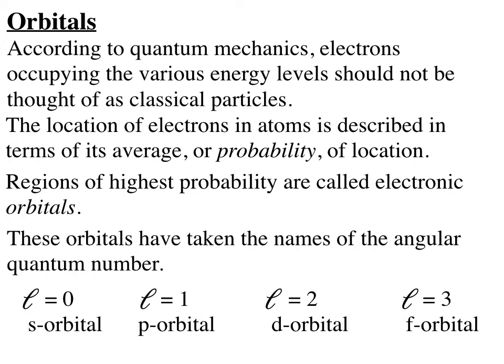You should also know the rules for orbital designations beyond F: L equal to 4 is a G orbital, L equal to 5 is H, L equal to 6 is I, and L equal to 7 is the L orbital — J is skipped for reasons in physics. For our atoms, though, all we need to concern ourselves with are the first four values: S, P, D, and F.